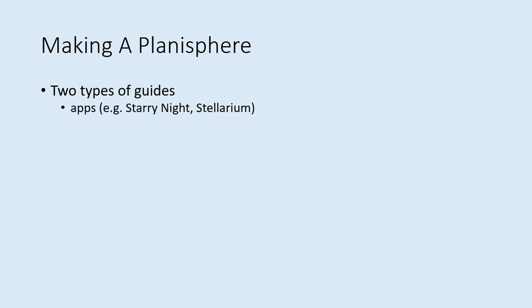These applications, such as Starry Night or Stellarium, can show you views of the sky from any time or place. Instructions either come with these apps or are available online. Take the time to play with the app and learn how to set things like the time, date, and location.